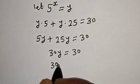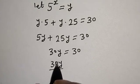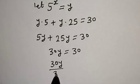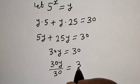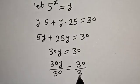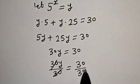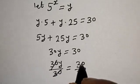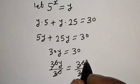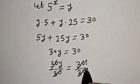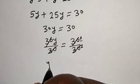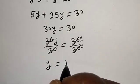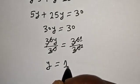Let's divide both sides by 30. We have 30y divided by 30, which equals 30 divided by 30. The 30s cancel on both sides, giving us y is equal to 1.